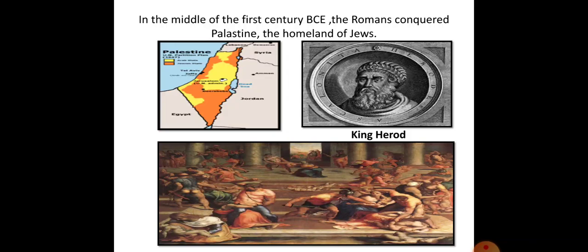The Jews looked forward to the coming of a Messiah who would liberate them from foreign rule and establish the kingdom of God. It was the time when people wanted a Messiah in their life who could save them, provide them peace and love, and spread love and brotherhood in the world. And at the same time, there was the birth of Jesus Christ, who started preaching the message of love, brotherhood, and compassion.